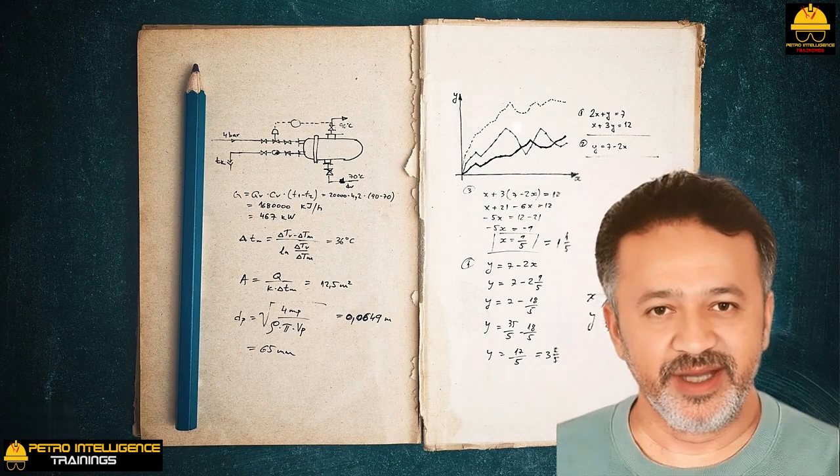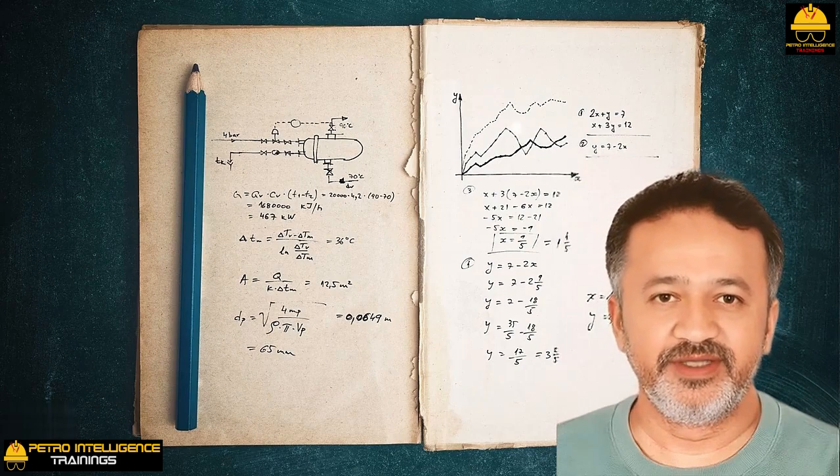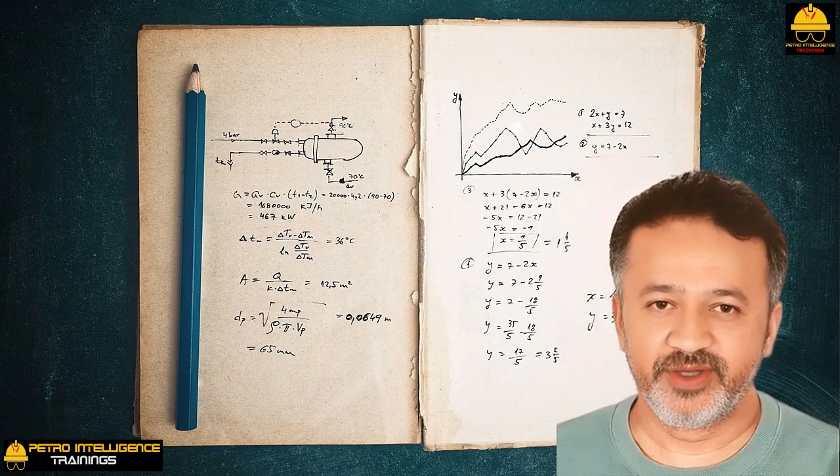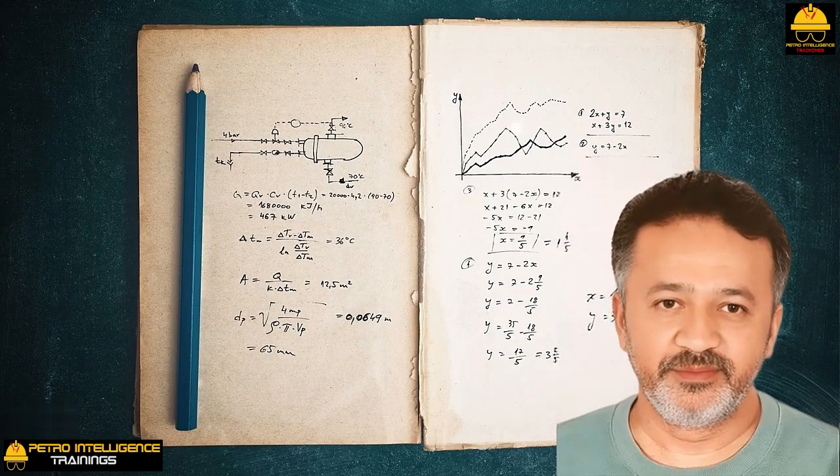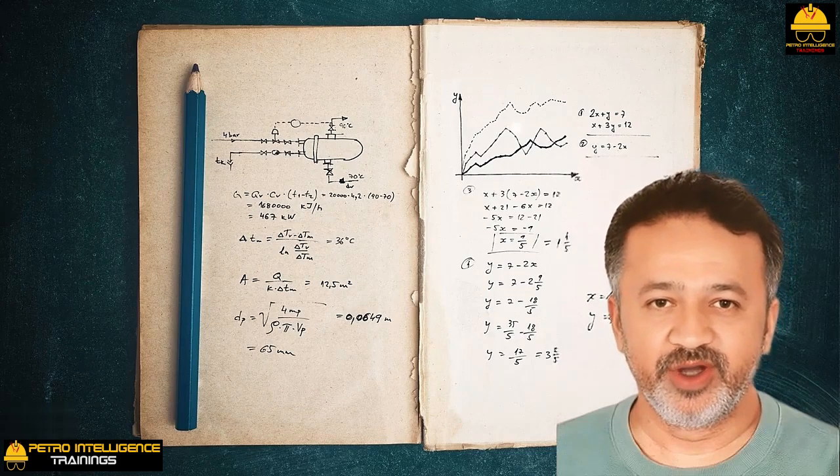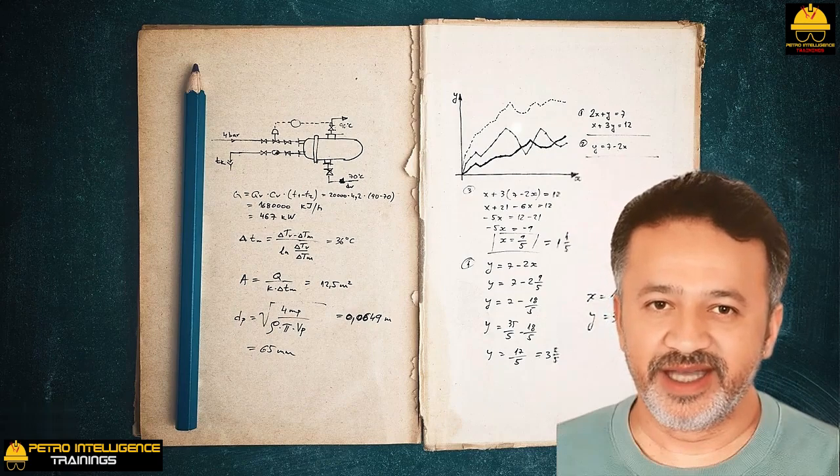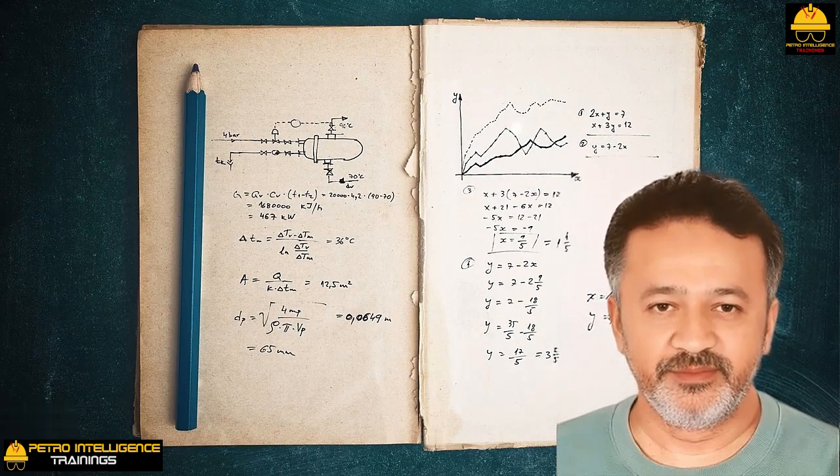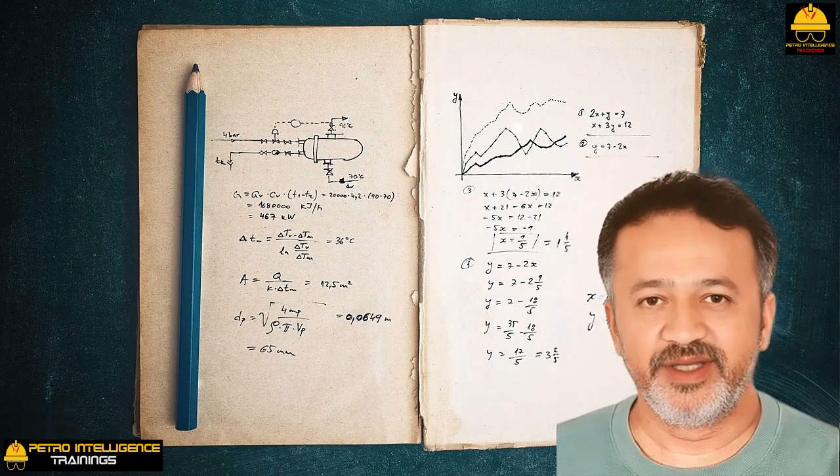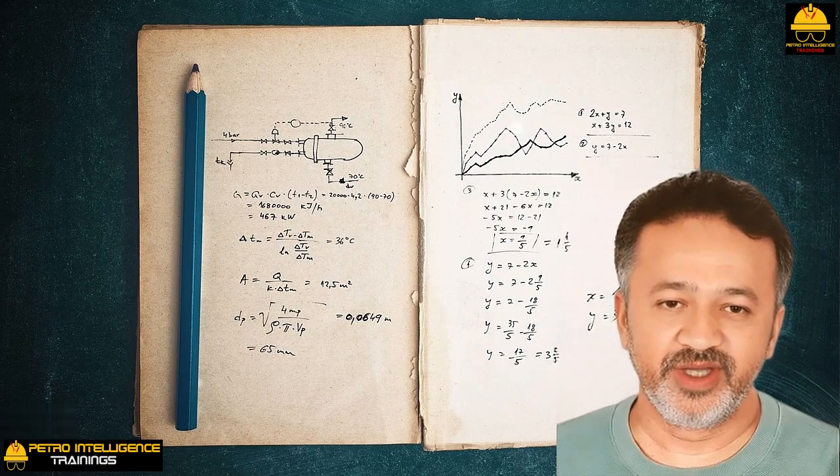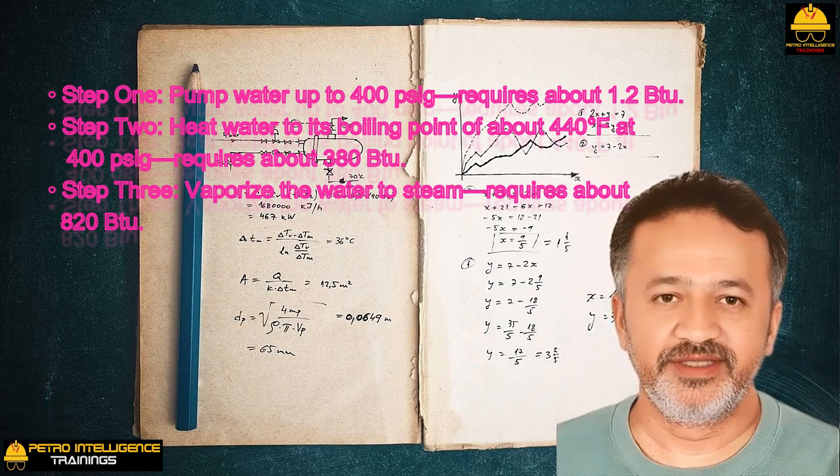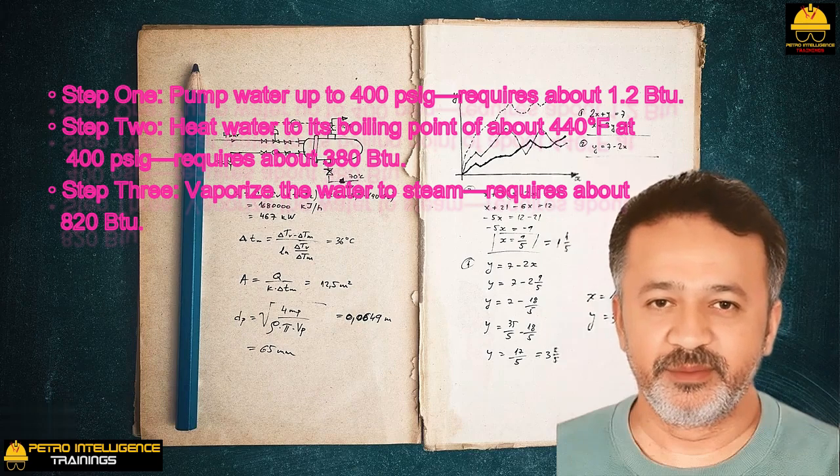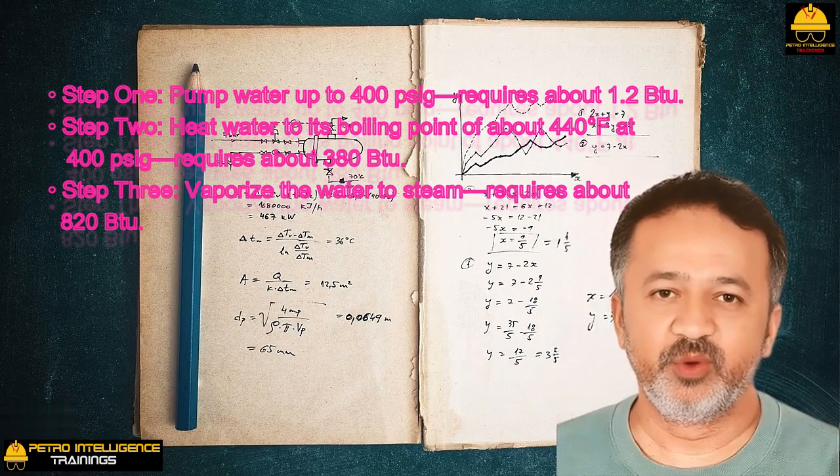The source of steam velocity: Let's assume I wish to generate one pound of saturated 400 psig steam in a boiler. I'll be starting with a pound of water at 60 degrees Fahrenheit and atmospheric pressure temperature. I'll do this in three steps and express the energy required for each step in BTU.